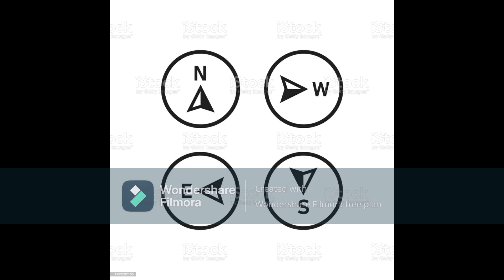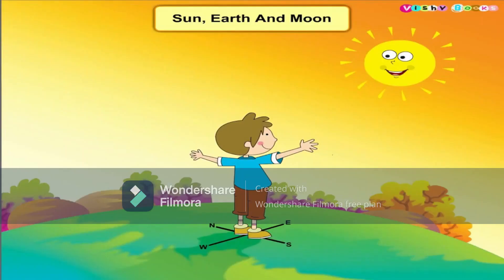There are four main directions. They are North, South, East and West. Now look at the child in this picture. He is facing the rising sun. The sun rises in the East. East is in the front. The sun sets in the West. West is at his back. His left hand points towards the North and right hand towards the South.